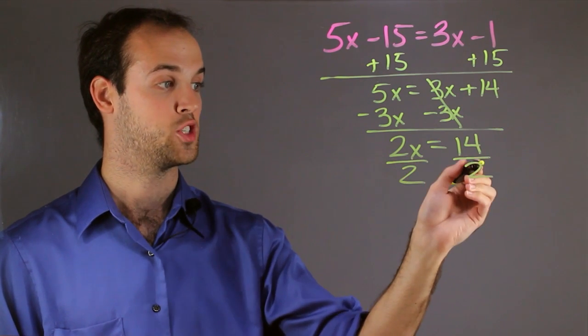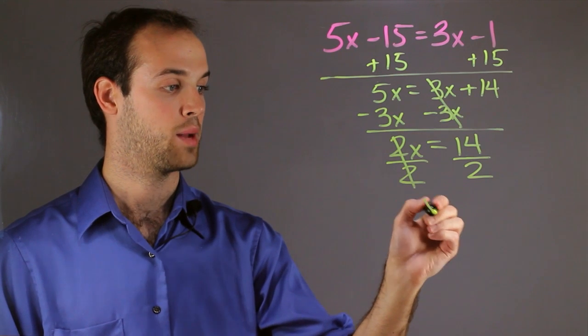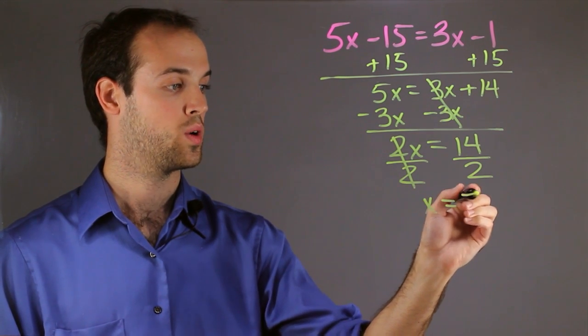And whatever I do to one side, I have to do to the other. So the 2's cancel, and I'm left with x equals 14 divided by 2, which is 7.